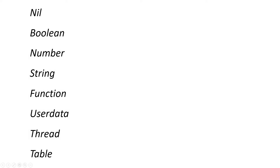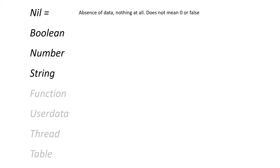There are eight different types of data that you can store in a variable. We are going to focus on these four. The first one is nil. It is the absence of data — that is an important thing to understand. It does not mean zero or false. It is the lack of anything.